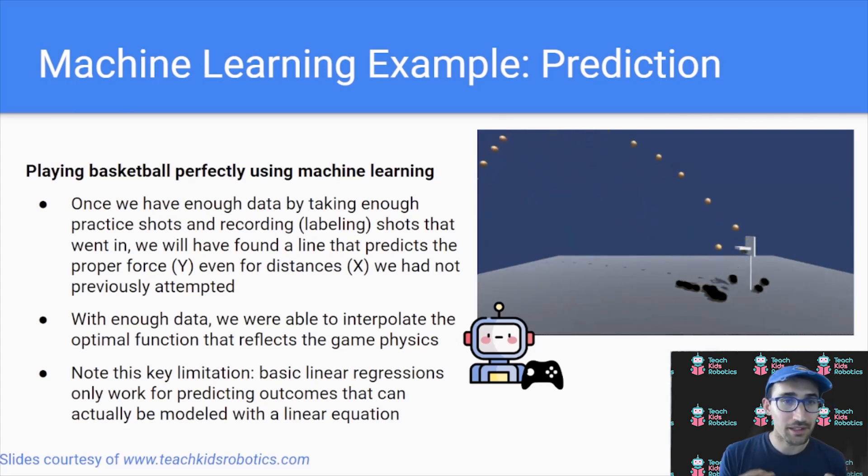It's by coming up with that linear regression and being able to answer the question of what force y do I need to shoot the ball at distance x in order to make a hoop. We basically interpolated or come up with the optimal function that reflects the underlying game physics that allows us to predict what the force is given the given distance.